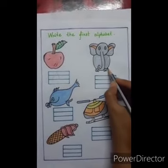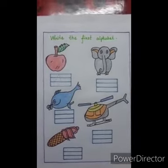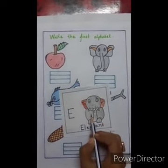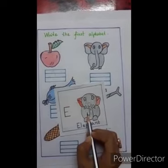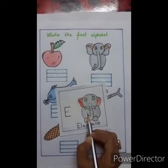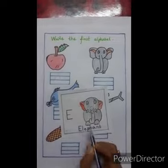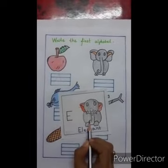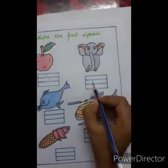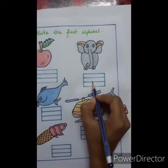This is a picture of an elephant. The first alphabet of the word elephant is E. E for elephant. Again, we will write E here.